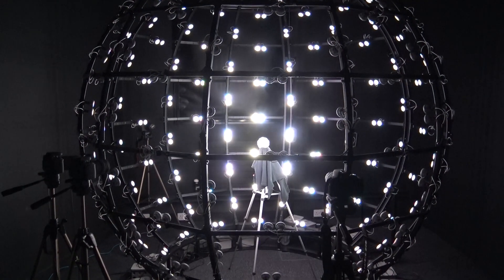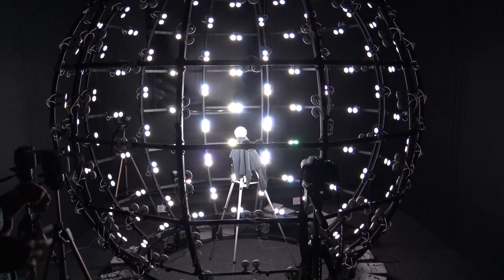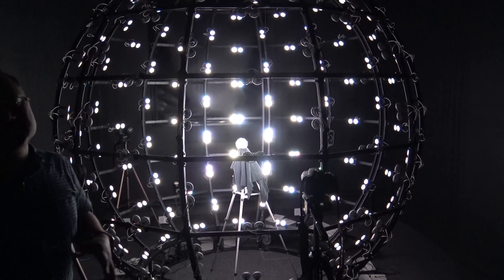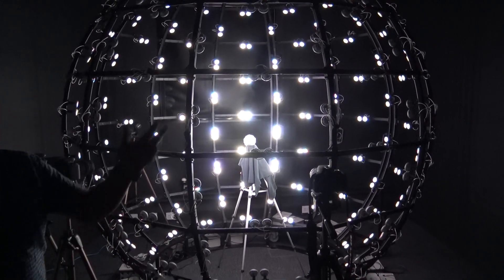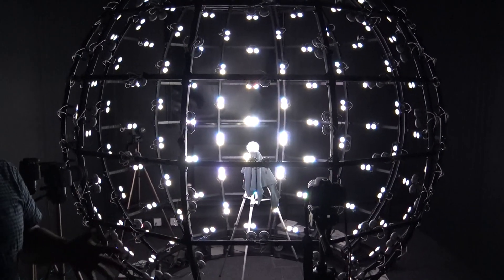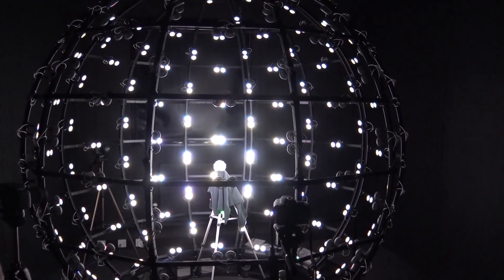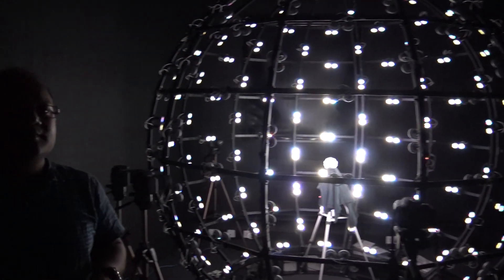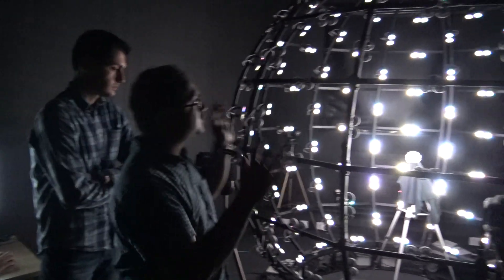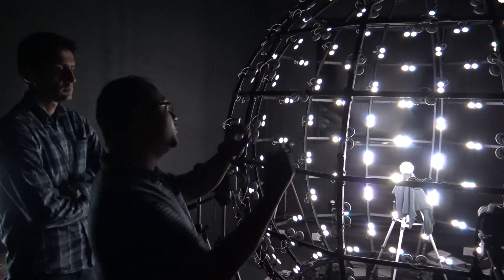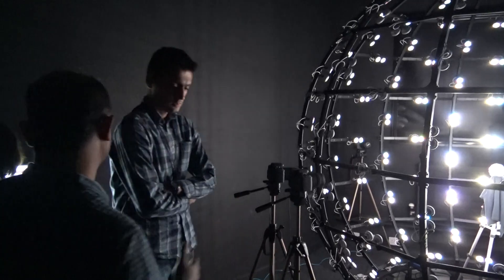So the other application that a light stage like this can be used for is many times actors need to be composited in a virtual scene, which could be a volcano or something like that. It's too dramatic, so you need to capture them in a studio and then composite them. And when you're doing that, the lighting in the studio needs to match the lighting of the virtual scene. So a device like the light stage can actually illuminate and map it directly with the desired lighting.